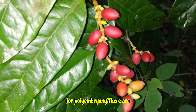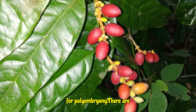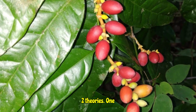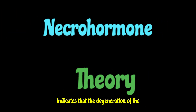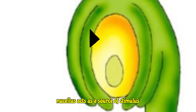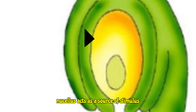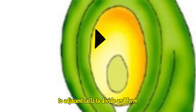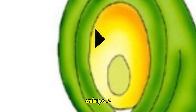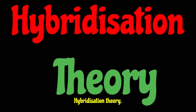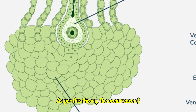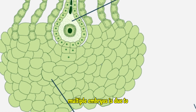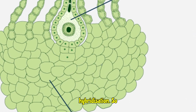There are two theories explaining the reason for polyembryony. The necrohormone theory indicates that the degeneration of the nucellus acts as a source of stimulus to adjacent cells to divide and form embryos. The hybridization theory proposes that the occurrence of multiple embryos is due to hybridization.